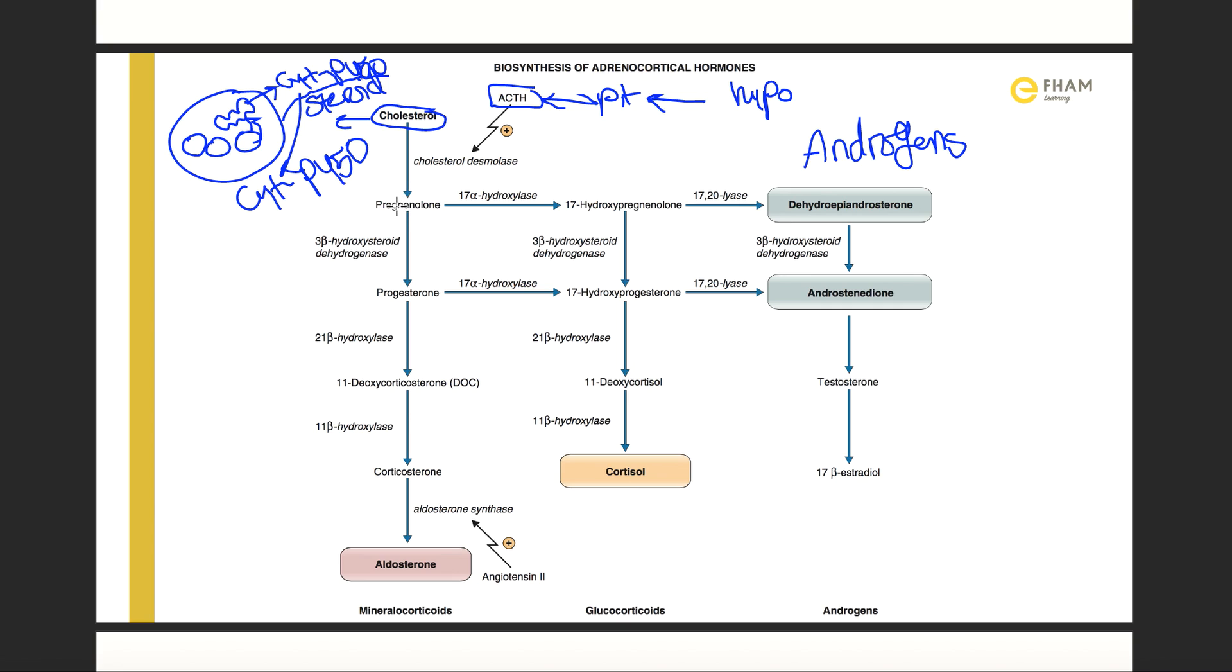Cytochrome p450 enhances the effect of cholesterol desmolase to convert cholesterol to pregnenolone. Now we will start by mineralocorticoids pathway to synthesize aldosterone. Pregnenolone is converted to progesterone by the enzyme 3-beta-hydroxysteroid dehydrogenase. Then progesterone is converted to 11-deoxycorticosterone, which is abbreviated DOC, by the enzyme 21-beta-hydroxylase. This enzyme is very important in many autoimmune diseases.